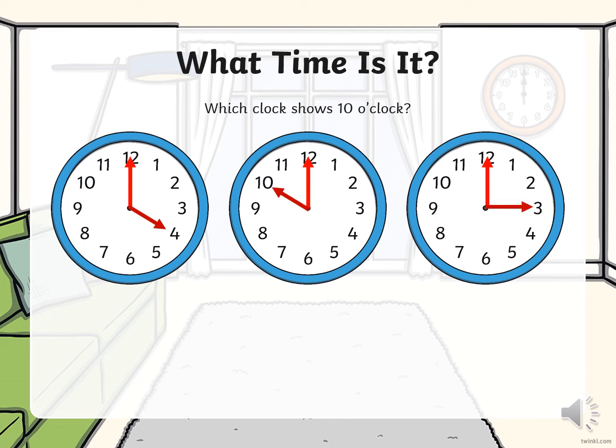What time is it? Which clock shows 10 o'clock? Remember what I said about the long arm pointing to the 12, which means o'clock? So now we only have to look for the hour hand pointing to the 10. Is it the first one? No.